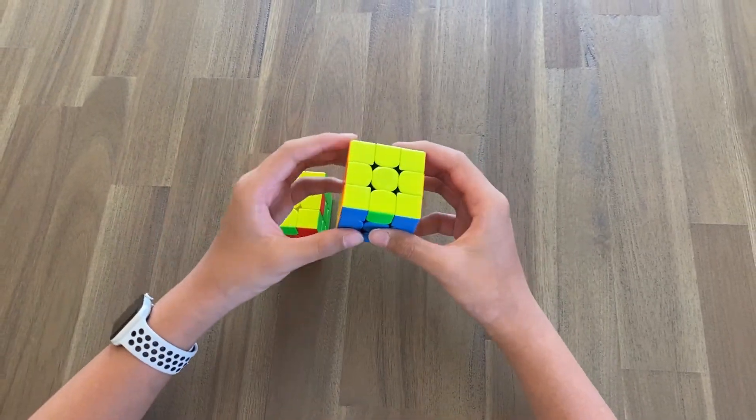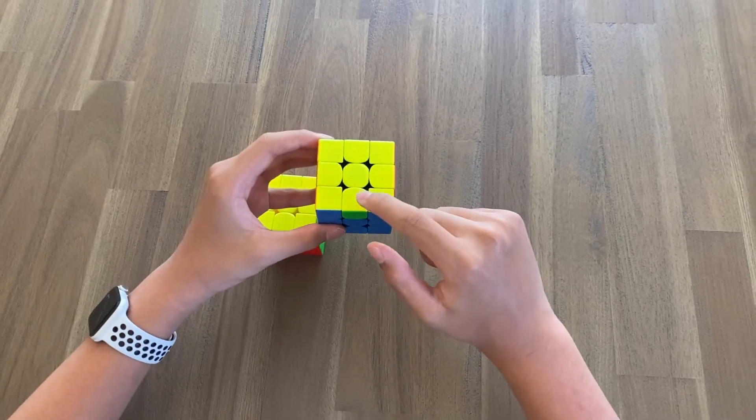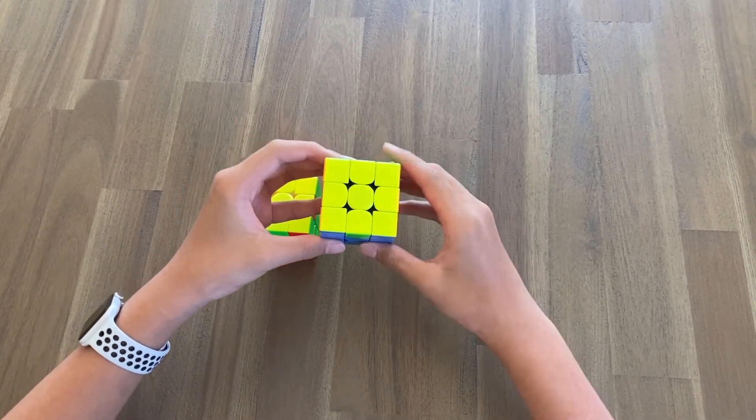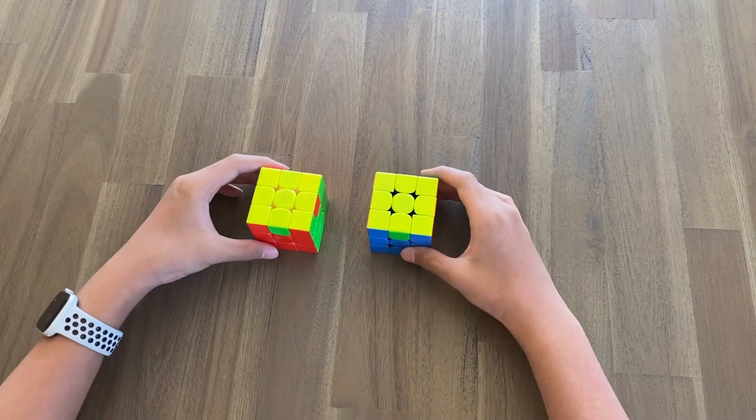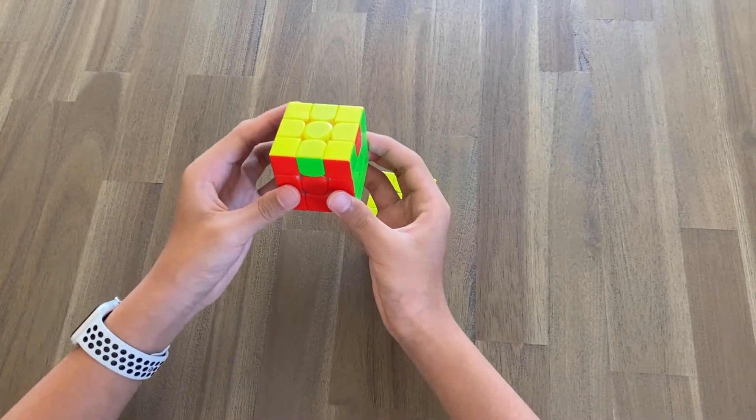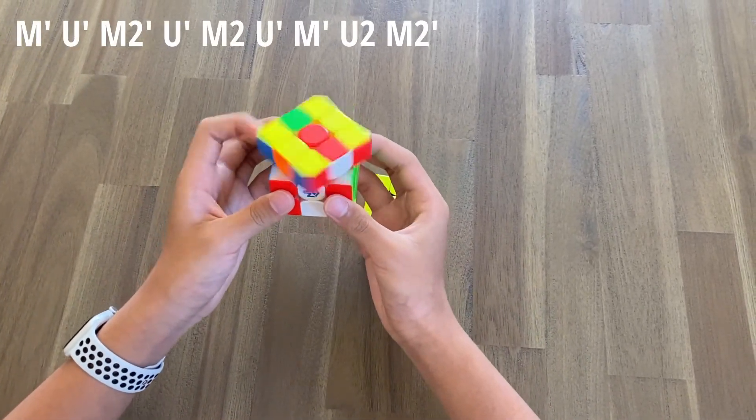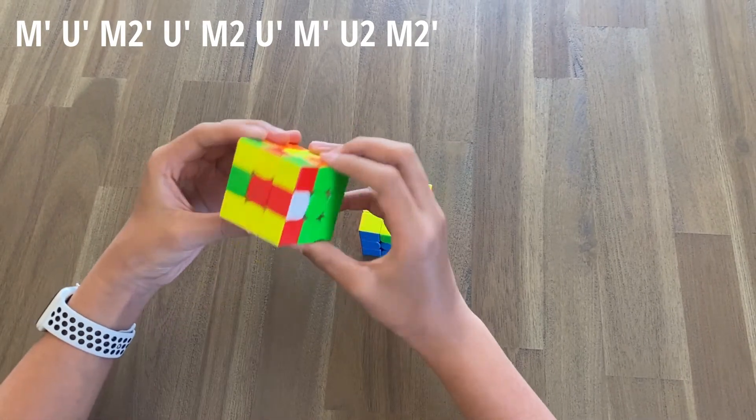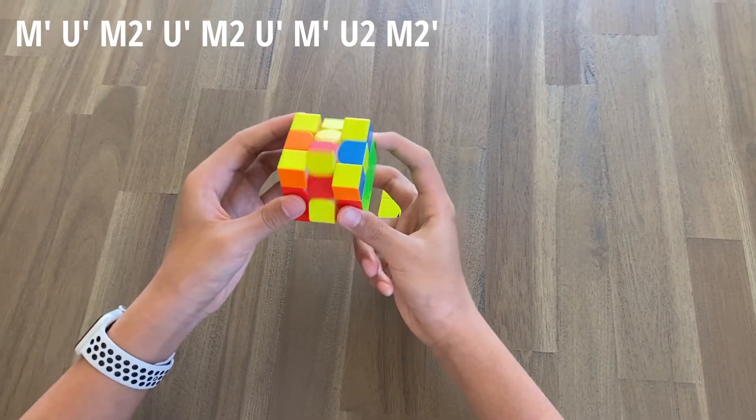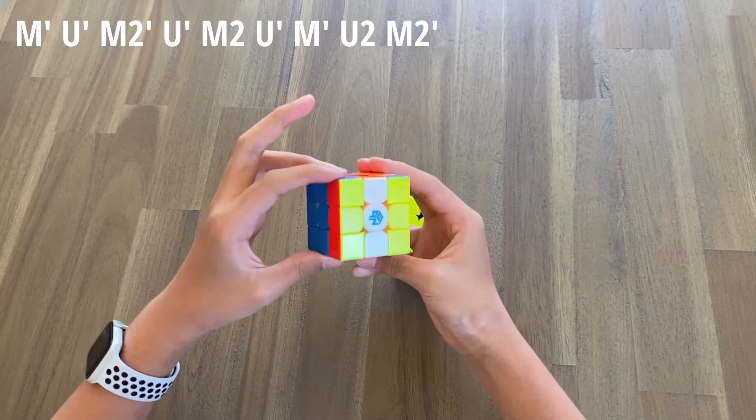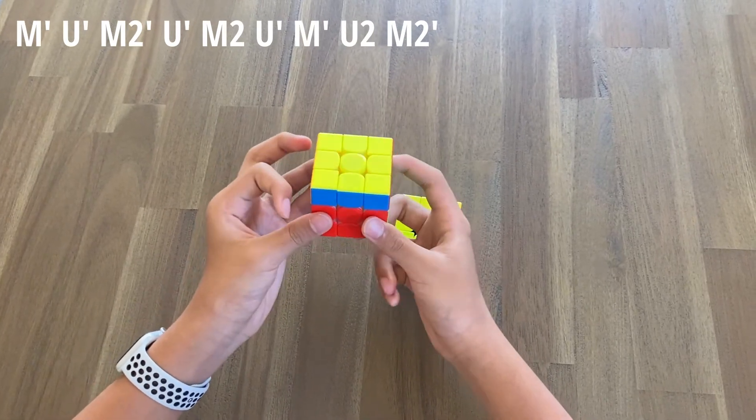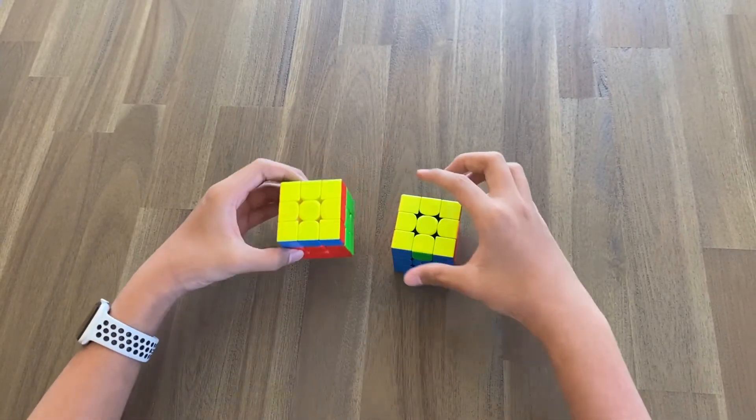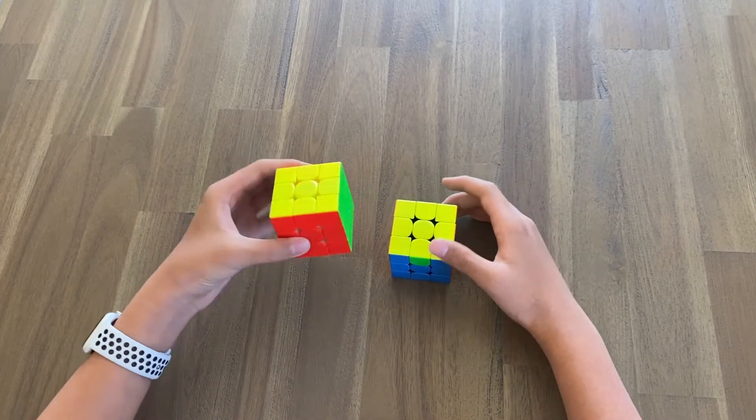First let's look at the Z perm. How you do this algorithm is like this—make sure you use two fingers again—and same thing. There you go. Of course you can do the AUF if that's bothering you.